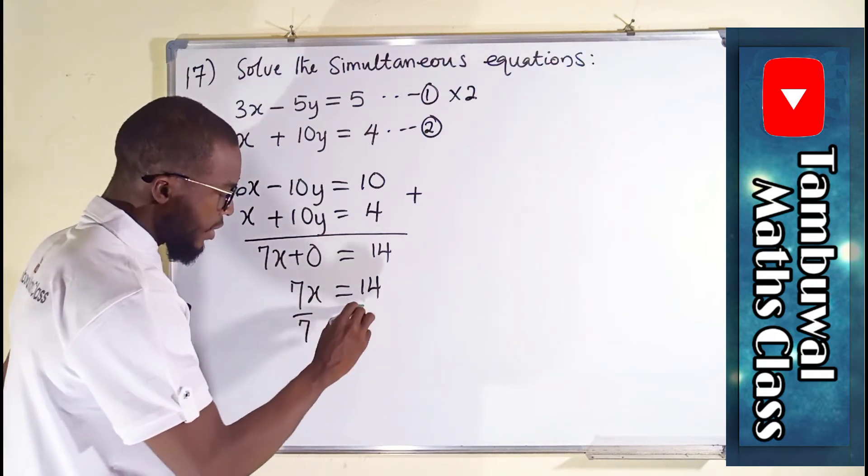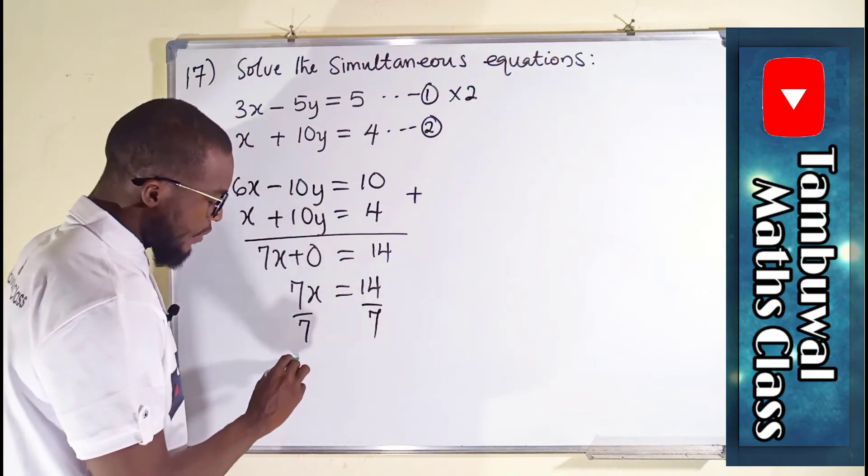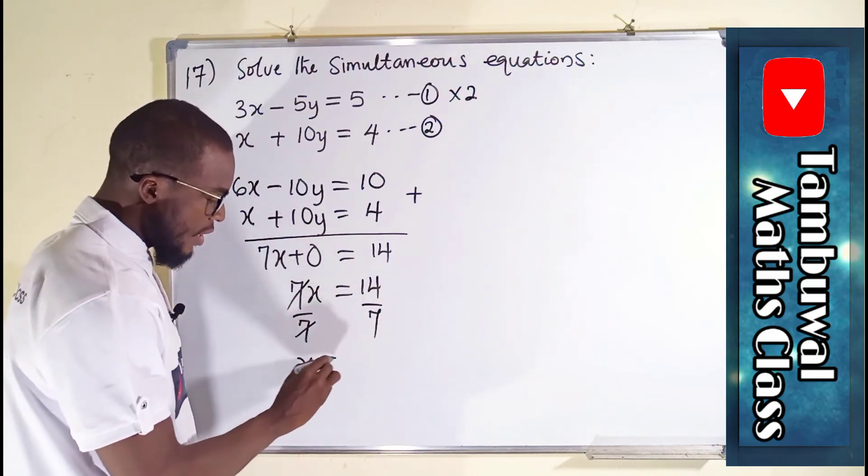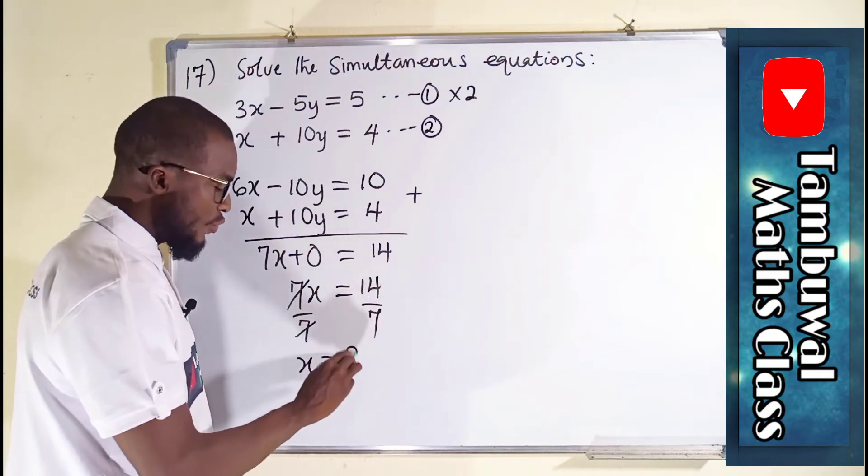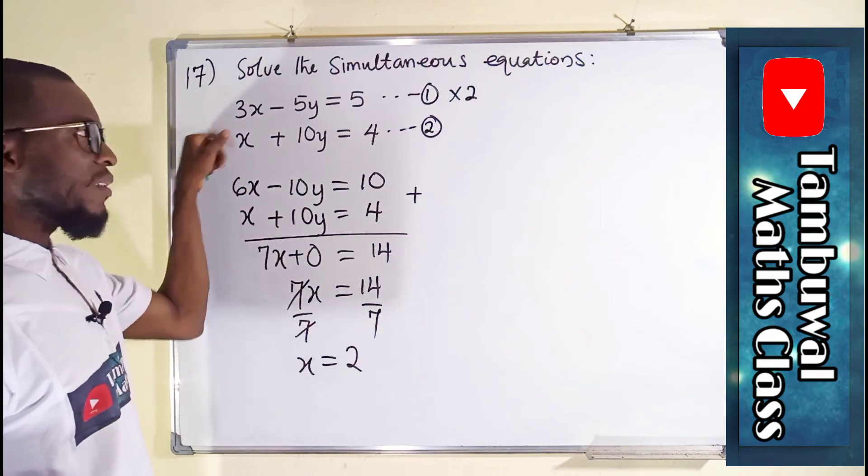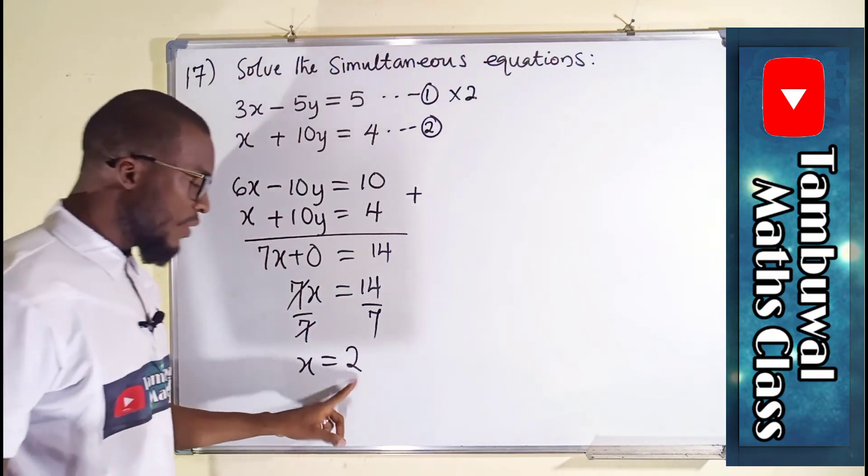Divide by 7. And you can see x because this will cancel this, leaving only x. And 7 can go into 14 two times.